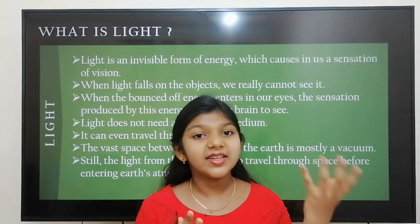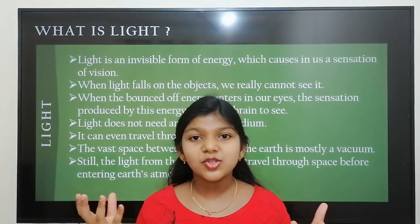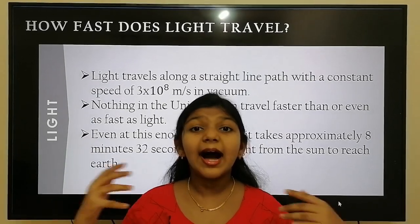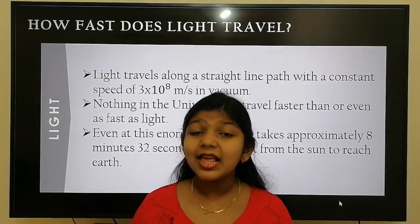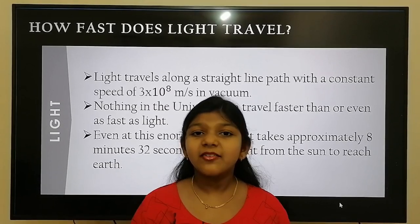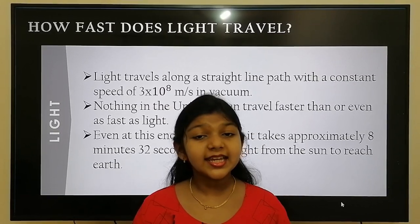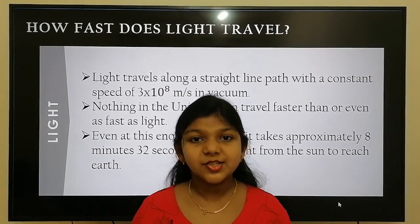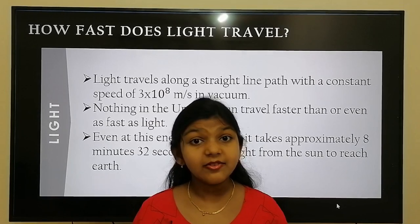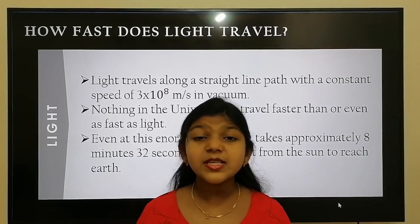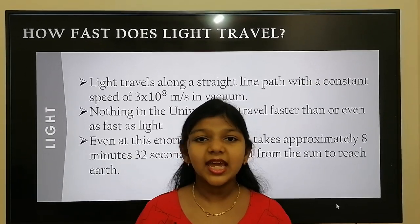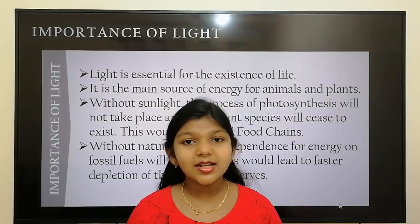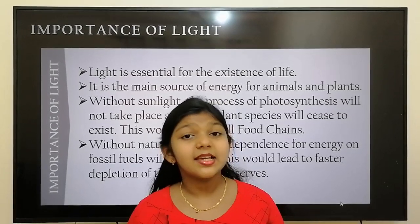The vast space between the sun and the earth is mostly a vacuum, but still the light from the sun can reach the earth. Light travels along a straight path with a constant speed of 3 × 10⁸ meters per second in a vacuum — nothing in the universe can travel faster than light. Even at this enormous speed, it takes about 8 minutes 32 seconds for light from the sun to reach the earth's atmosphere.